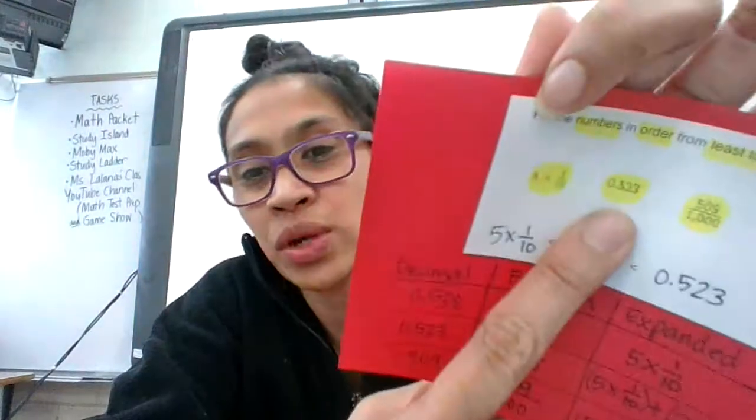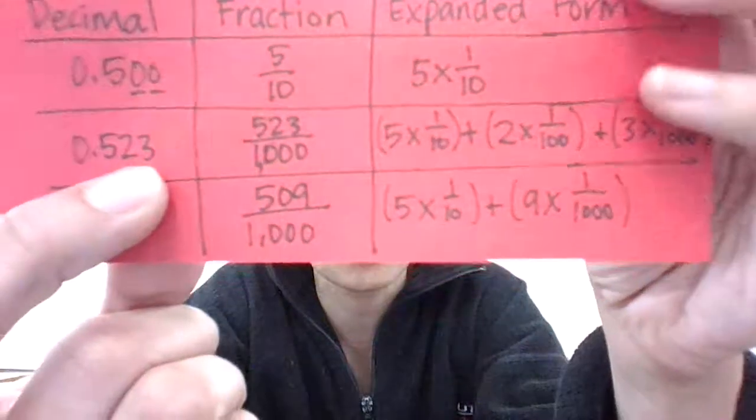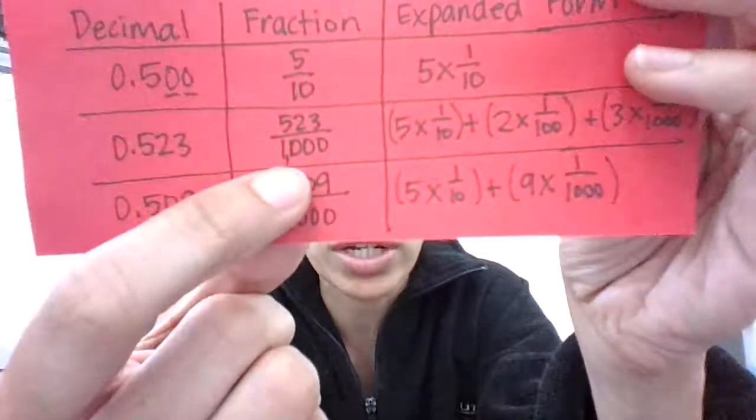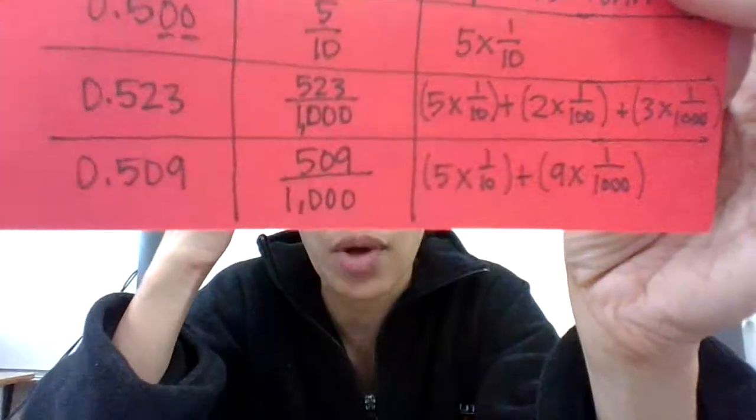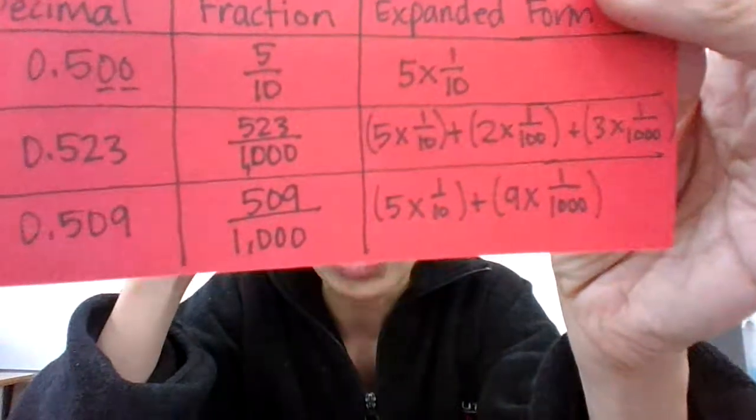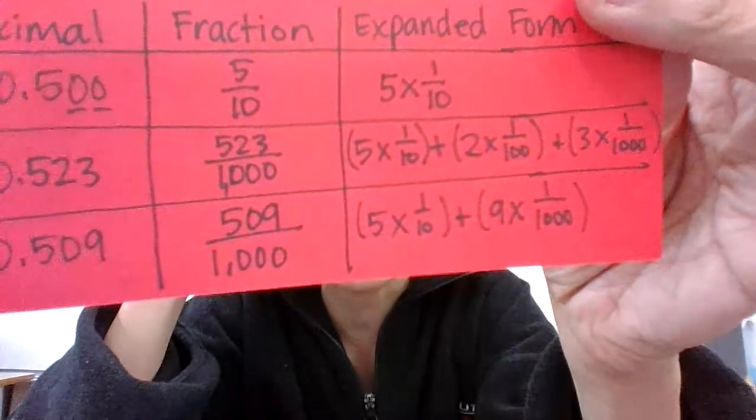The next one, 0.523 right there, is, where is it? That's a decimal form. So then I wrote it as a fraction. And then I wrote it in an expanded form also. 5 times 1/10, 2 times 1/100, plus 3 times 1/1000.